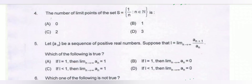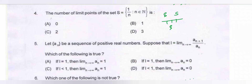Question number 4: the number of limit points of the set S = {1/n : n belongs to natural numbers}. The definition of a limit point: a real number j is a limit point of a set S if every neighborhood of j contains at least one member of S other than j itself.